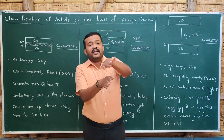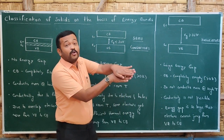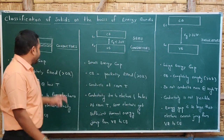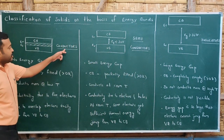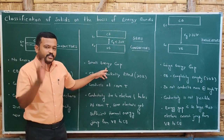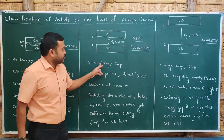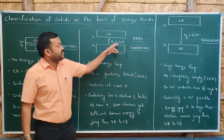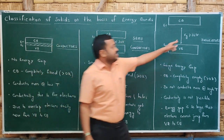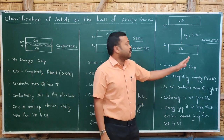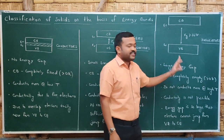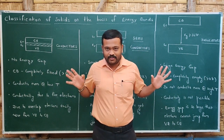In conductors, the valence band and conduction band overlap with each other, and there is no energy gap. In semiconductors, there is a gap, but it is small — less than 3 electron volts. If the energy gap is greater than 3 electron volts, we call it an insulator, and there is a large energy gap.